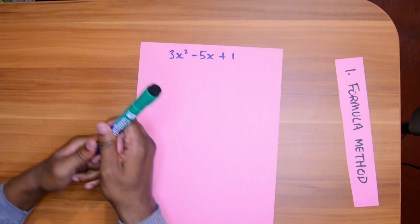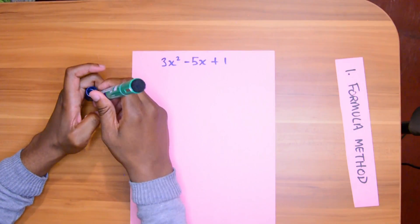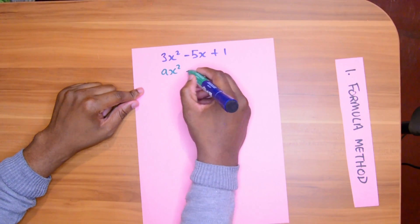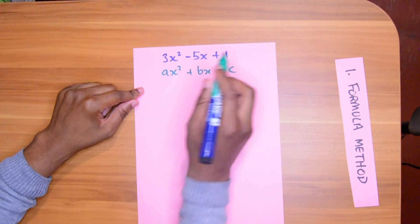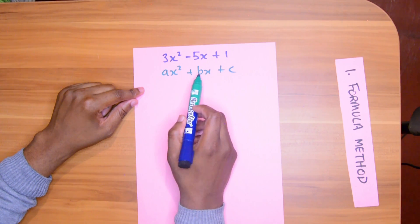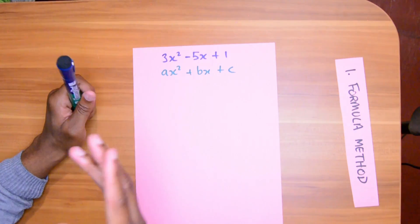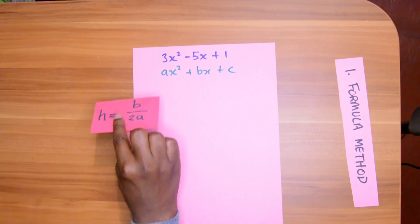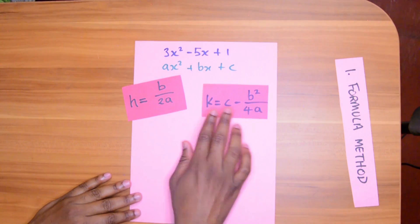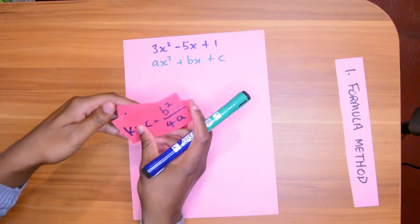Let's start with the formula method. This is a past paper question. Now, this is important — everything that I do, follow the exact statement and exact settings. The first thing you want to do is write A x squared plus B x plus C, the general form of a quadratic equation. B is negative 5, C is 1, A is 3. We're lining up to use a formula. The two formulas you want to write are: H equals negative B over 2A, and K equals C minus B squared over 4A. Memorize these two formulas.